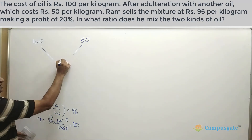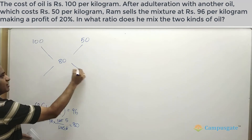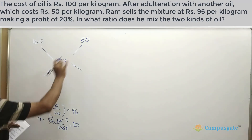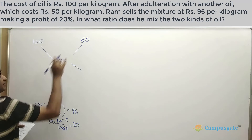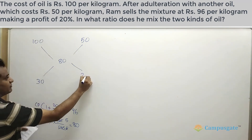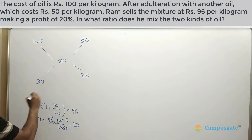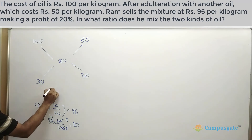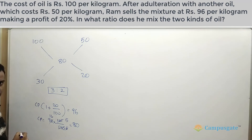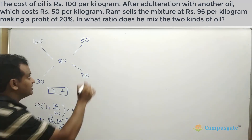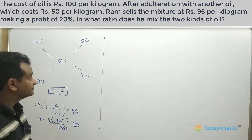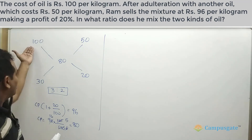Now put 80 as the mean price and confidently apply the allegation rule. 80 minus 50 gives you 30, and 100 minus 80 gives you 20. So the two oils are to be mixed in the ratio 3 to 2.